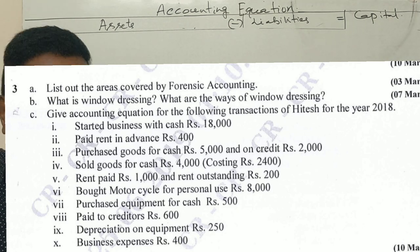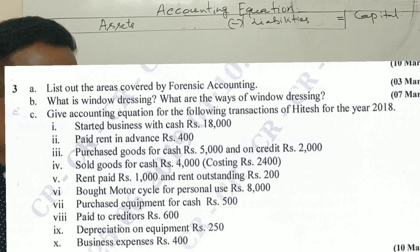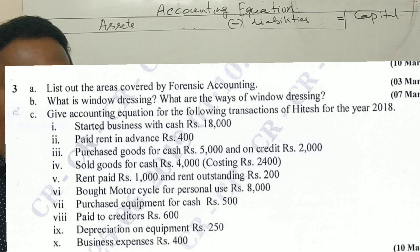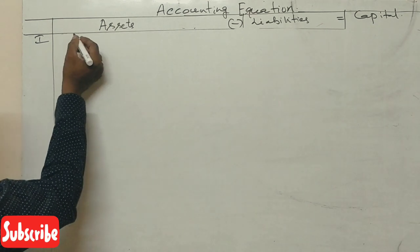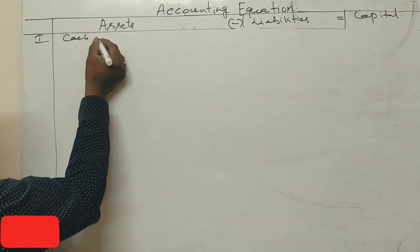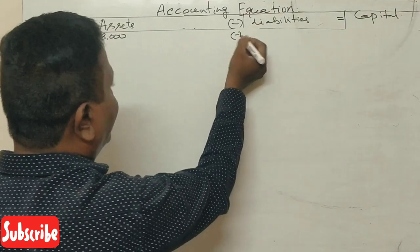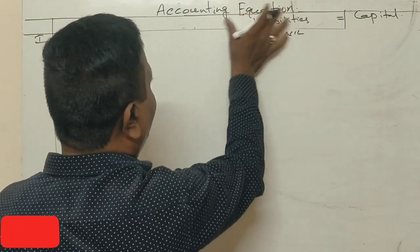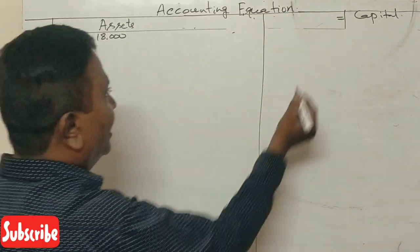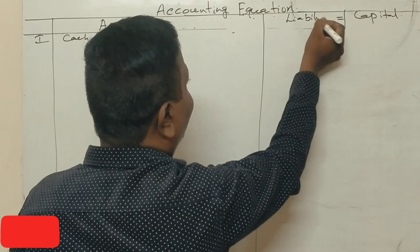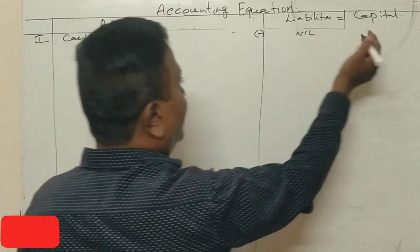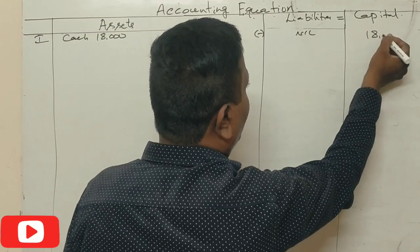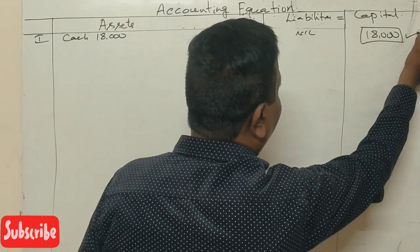The question says: Give the accounting equation for the following transactions for the year 2018. First transaction: started business with cash ₹18,000. Assets = ₹18,000, Liabilities = nil, Capital = ₹18,000.